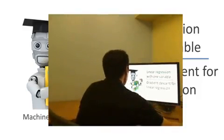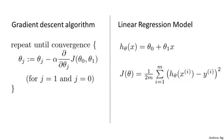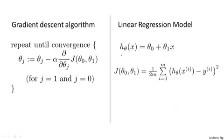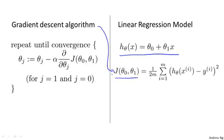So this is what we worked out in the previous videos. There's our gradient descent algorithm, which should be familiar. And here's the linear regression model with our linear hypothesis and our squared error cost function. What we're going to do is apply gradient descent to minimize our squared error cost function.